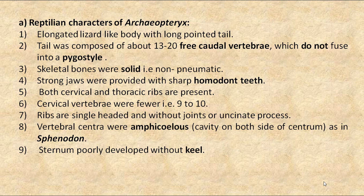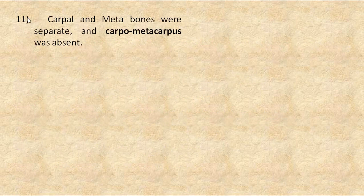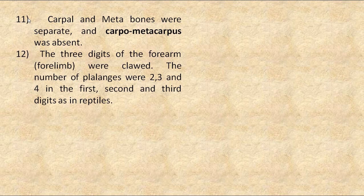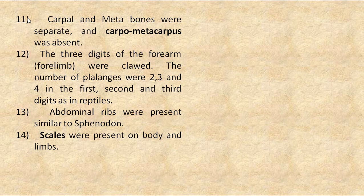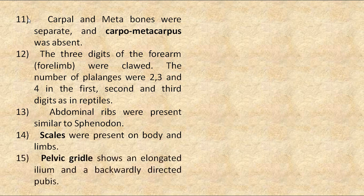The sternum was poorly developed without a keel. Eyes were provided with sclerotic ossicles. Carpal and metacarpal bones were separate and a carpometacarpus was absent. The 3 digits of the forelimb were clawed. The number of phalanges were 2, 3, and 4 in the 1st, 2nd, and 3rd digits respectively, as in reptiles. Abdominal ribs were present, similar to Sphenodon. Scales were present on the body and limbs. The pelvic girdle shows an elongated ilium and a backwardly directed pubis.